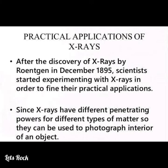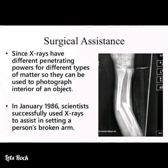Practical applications of X-rays: After the discovery of X-rays by Röntgen in December 1895, scientists started experimenting with X-rays to find their practical applications. Since X-rays have different penetrating powers for different types of matter, they can be used to photograph the interior of an object. In January 1896, scientists successfully used X-rays to assist in setting a person's broken arm.